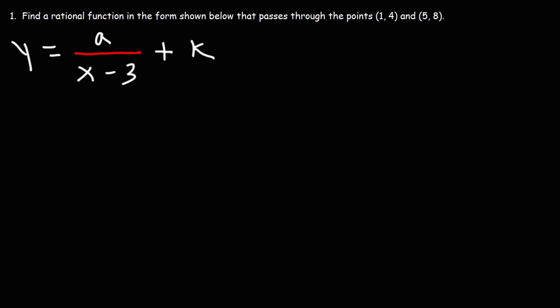Find the rational function in the form shown below that passes through the points (1, 4) and (5, 8). So how can we do this?